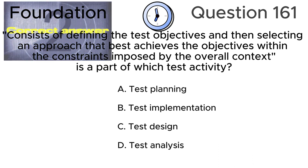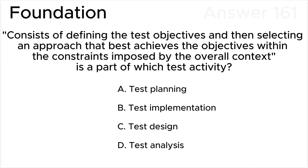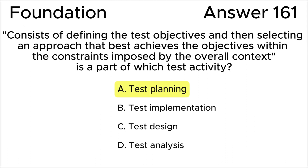To answer this question, it's enough to remember what each phase includes. The correct answer is A: defining the test objectives and then selecting an approach that best achieves the objectives within the constraints imposed by the overall context is a part of the test planning activity, according to the ISTQB syllabus.